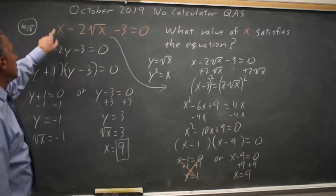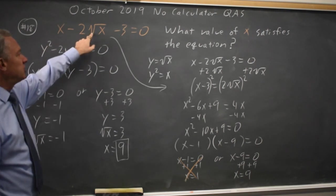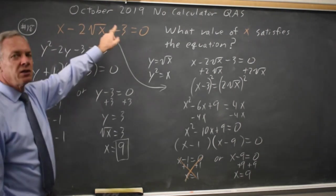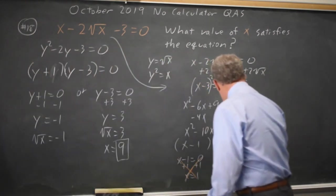How about 9? We already checked that that worked. That's the answer we got here and it works. 9 minus 2 times 3 is 9 minus 6 is 3. Minus 3 equals 0. So 9 is, again, the answer.